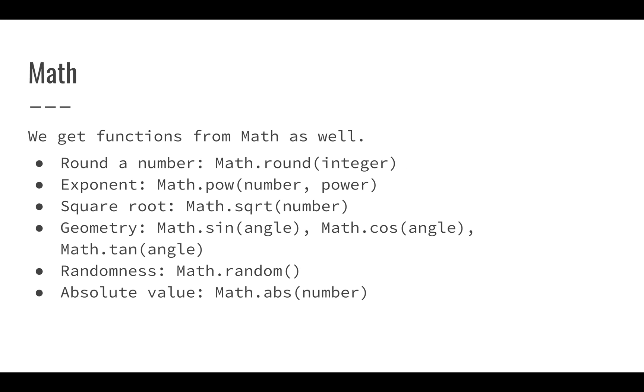There's a lot of functions available from the Math object as well. We've seen Math.PI already in our last module, but we have other things we can do with Math. Math has some other constants, but we have Math.round, which will round a number similar to that toFixed. We have Math.pow, which gives you an exponent. We have Math.sqrt, which gives us a square root of a number.